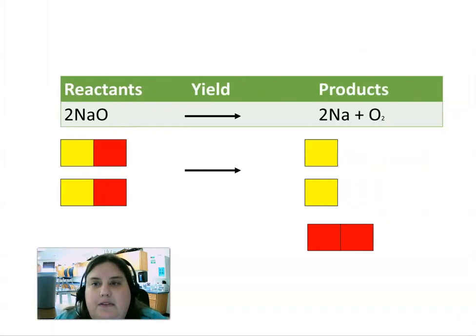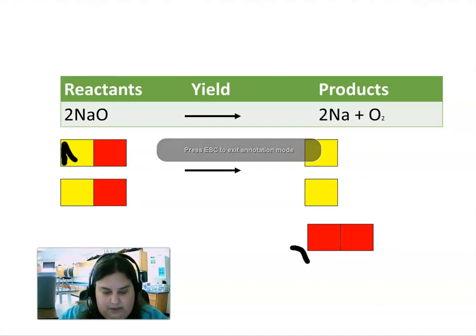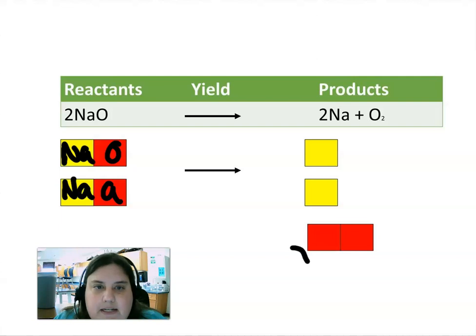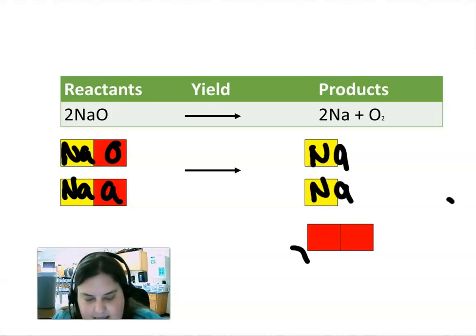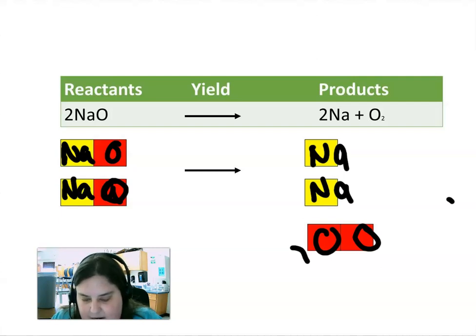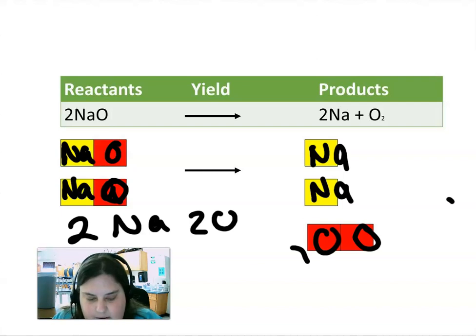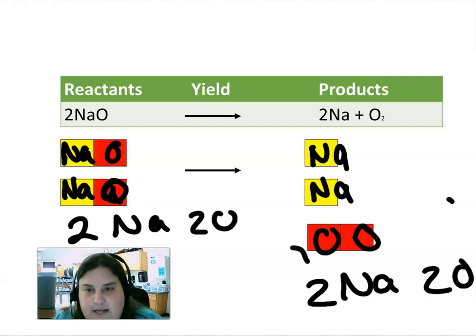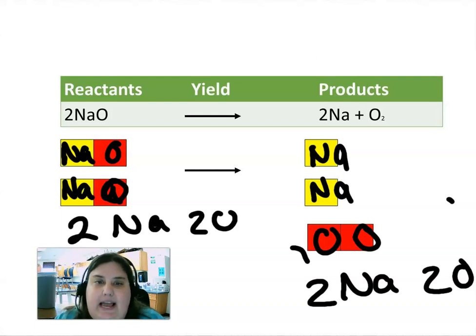Let's look at some examples of the law of conservation of mass. In this equation, I have two NaO, and that's going to yield two NaO2. So it looks different — I've got new products. However, over here I have two Na's and two O's, and over here I also have two Na's and two O's, so it's equal on both sides. This models the law of conservation of mass: it's rearranged, but I didn't add any atoms of Na or O, and I didn't take away any atoms of Na or O.